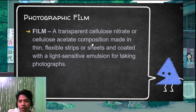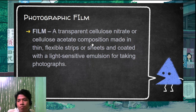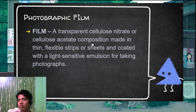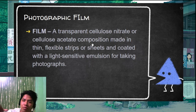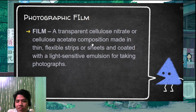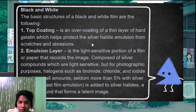Now let's go to the photographic film. The film is the negative film — it is used to reproduce the positive print. For example, if you have a camera, you load it with film, take photographs, and the image gets recorded on the film. You then bring the film to a studio to reproduce the picture. As long as the film is intact, you can reproduce the image anytime. It is a transparent cellulose nitrate or cellulose acetate composition made in thin flexible strips or sheets, coated with a light-sensitive emulsion for taking photographs.